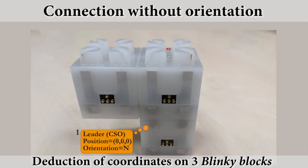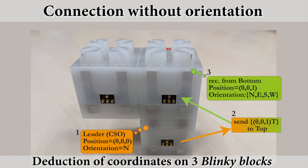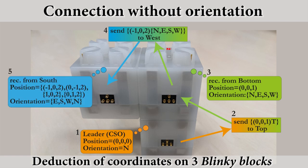In this second example, the CSO is connected to its neighbor by the top connector. This connector loses the relative orientation of the module. Then, the top right blinky block gets its position, but not its orientation. As a consequence, the last robot on the left can be placed at four different positions.